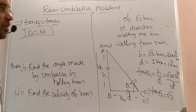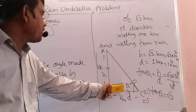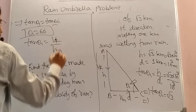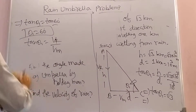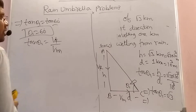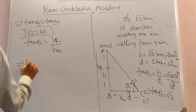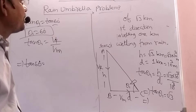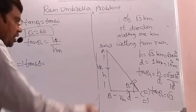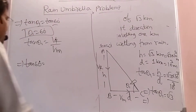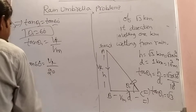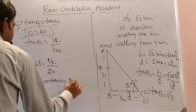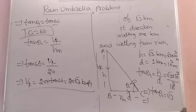The second part is to find the velocity of the rain. Now using tan theta 1 equals velocity of rain divided by velocity of man. Substituting the values: theta 1 equals 60 degrees, so tan 60 degrees equals velocity of rain divided by velocity of man. The velocity of the man is 20 km/h as given. Therefore velocity of rain equals 20 into tan 60 equals 20 root 3 km/h. That is the velocity of the rain.